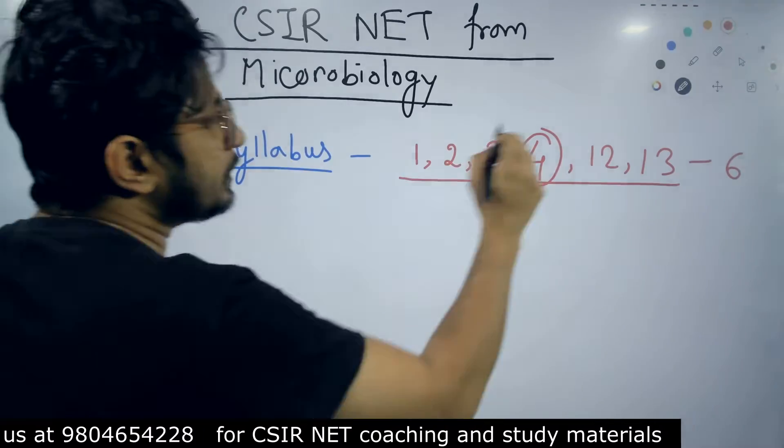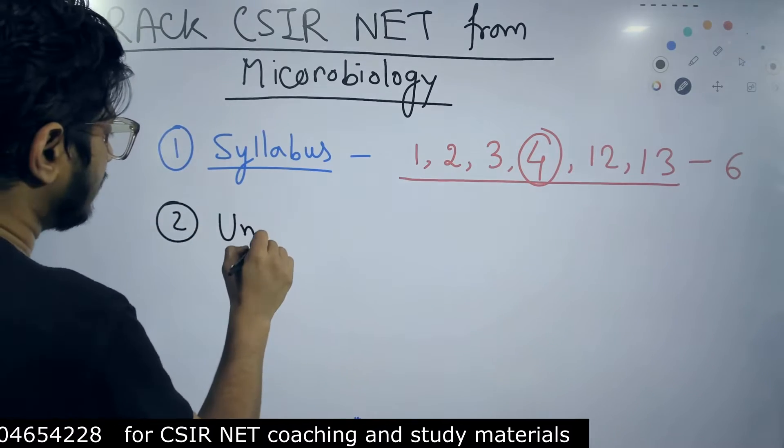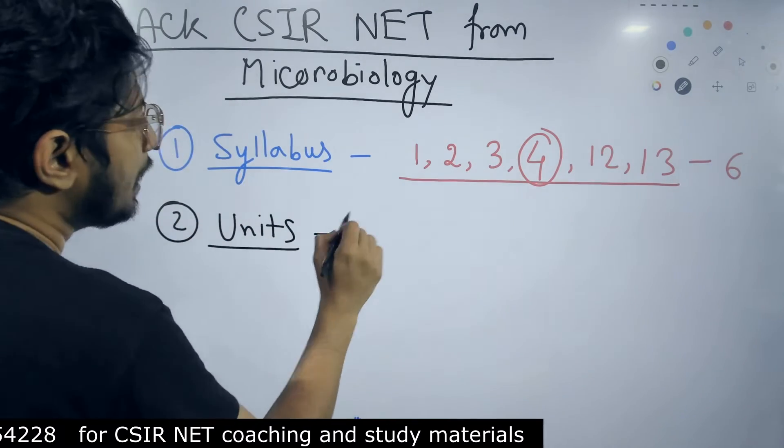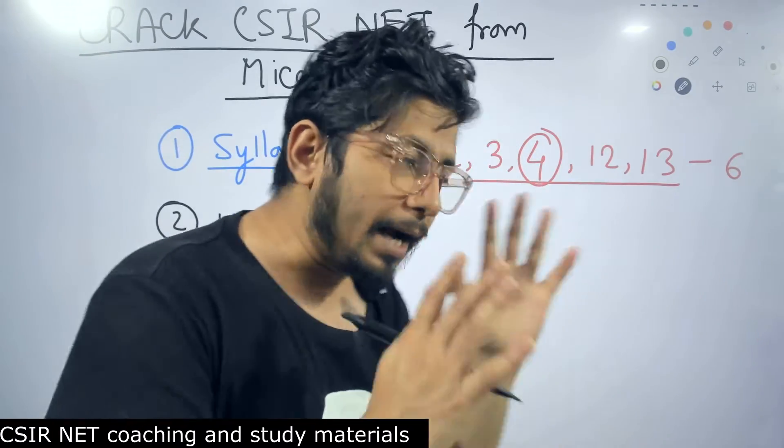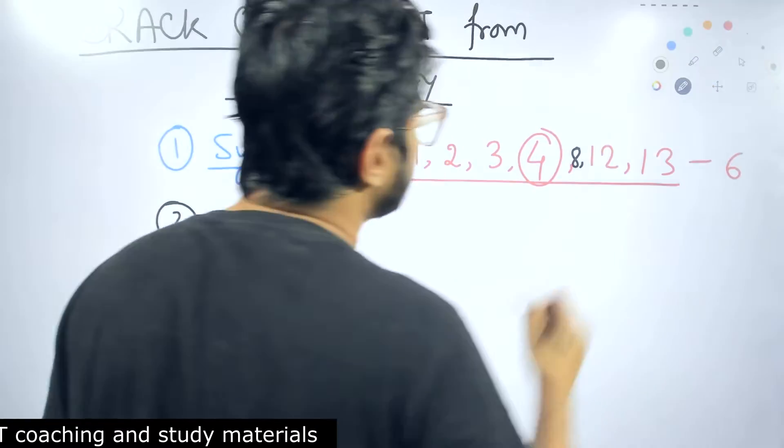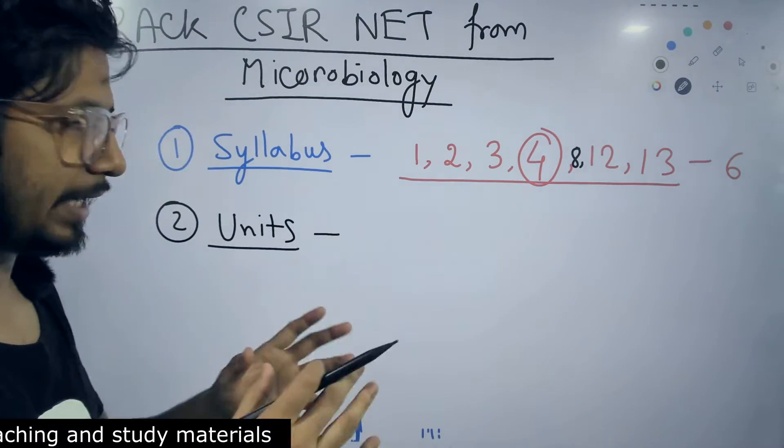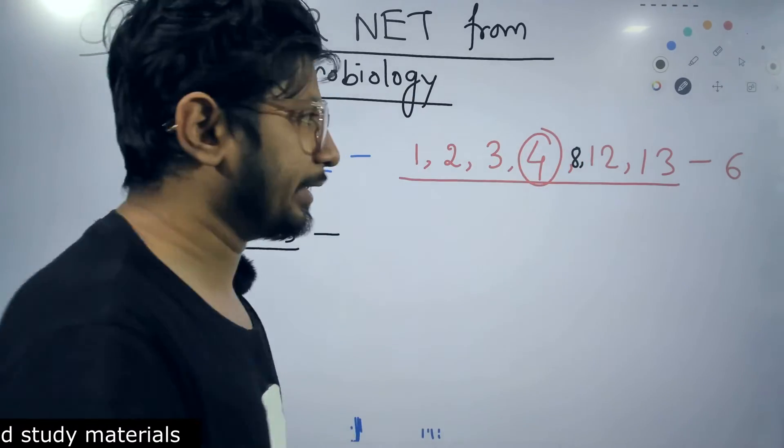The units that you are preparing - apart from Units 1, 2, 3, 4, then 12 and 13 - apart from that, there are others. Obviously Unit 8 is out there, that is common. That you have already prepared from microbiology background - the molecular genetics part is already there.